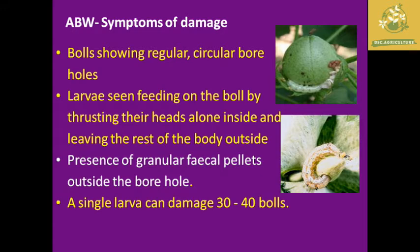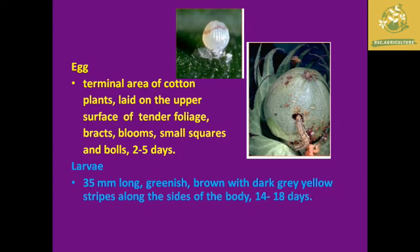The pest is found in the terminal area of cotton as well as on the upper surface of leaves. It causes damage within 2 to 5 days. The destructive stage is the larva, which grows up to 35 mm.